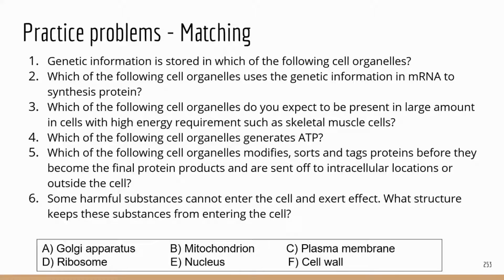Genetic information is in the form of DNA, and DNA is stored in the nucleus — correct answer is E (nucleus). Number two: which of the following cell organelles uses the genetic information in messenger RNA to synthesize proteins? The correct answer is ribosome — that's the job for ribosomes.